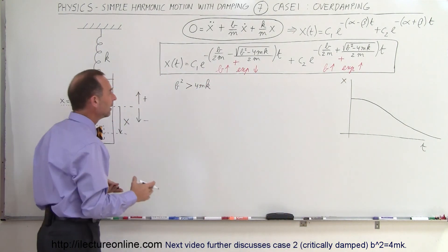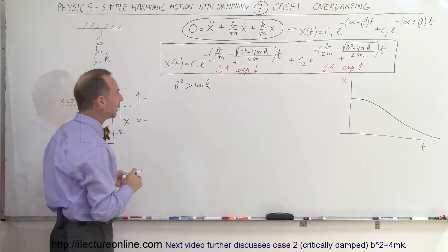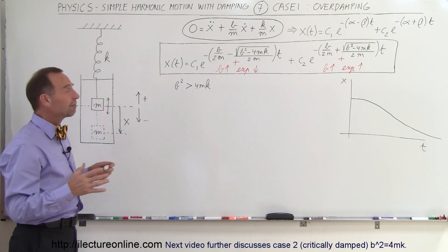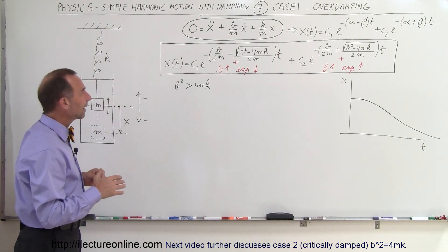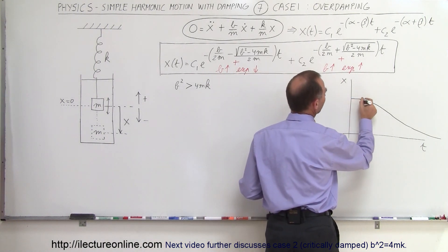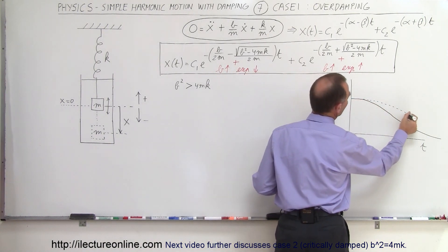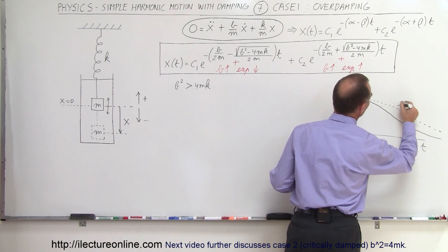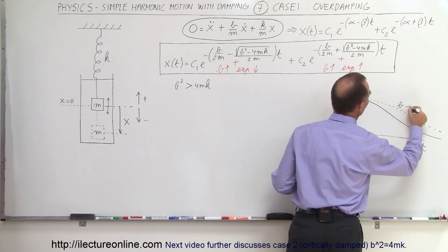So this would be the displacement X versus the time T. That's what we mean by we have overdamping. So the only thing left here to understand is that the larger B becomes, the longer it will take for the equilibrium point to be reached. So this would then represent B becoming larger.